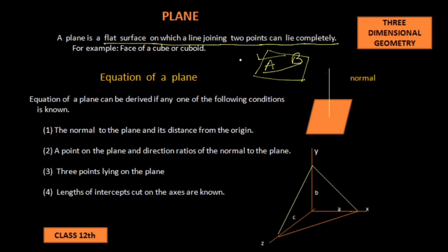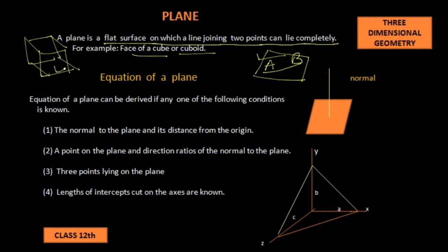Examples of a plane can be the face of a cube or a cuboid. We know that a cube or a cuboid is like a box. Now a box has six faces: top, bottom, and its four walls. Now all these faces are called planes — these six faces are the six planes.